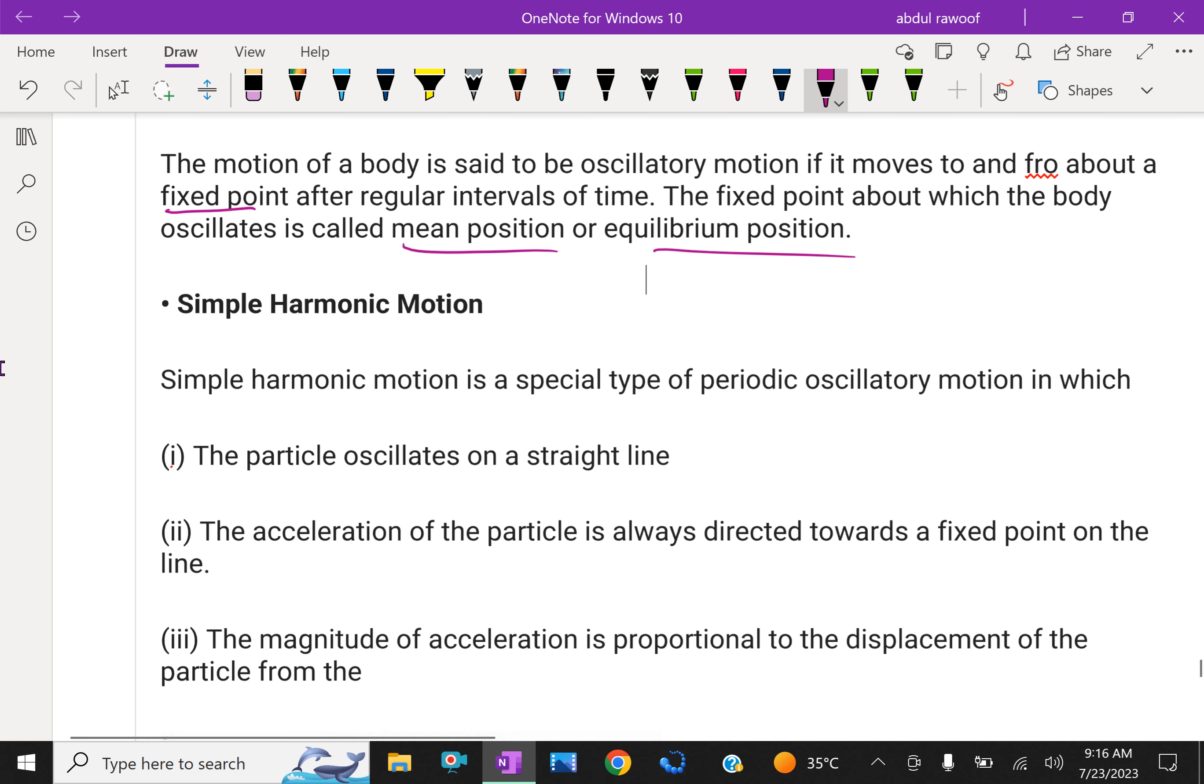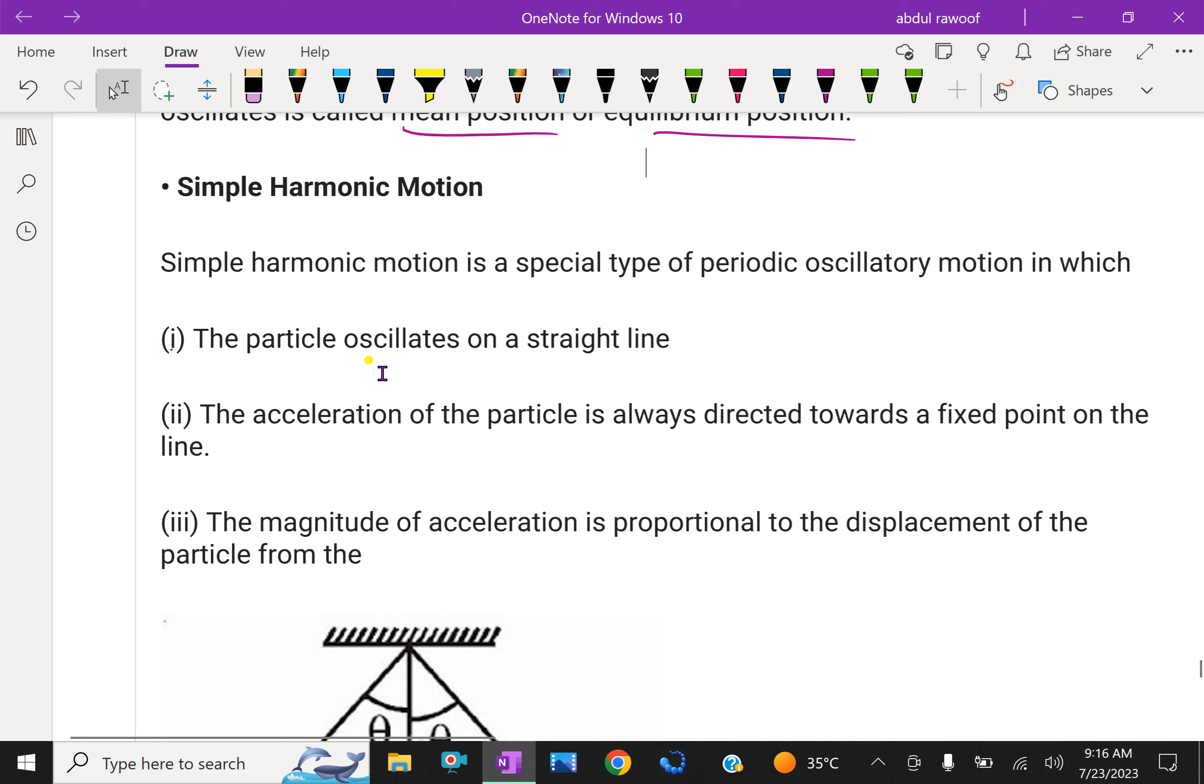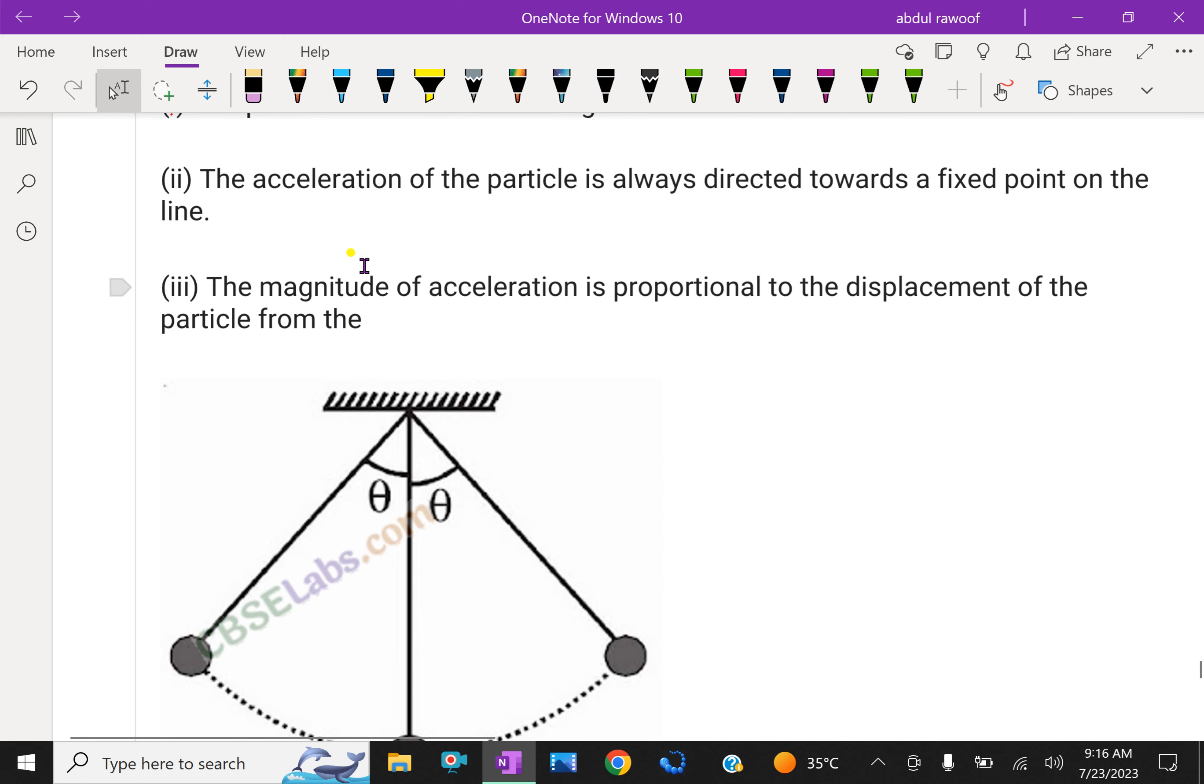Simple harmonic motion is a special type of periodic oscillatory motion in which the particle oscillates on a straight line. The acceleration of the particle is always directed towards a fixed point on the line.